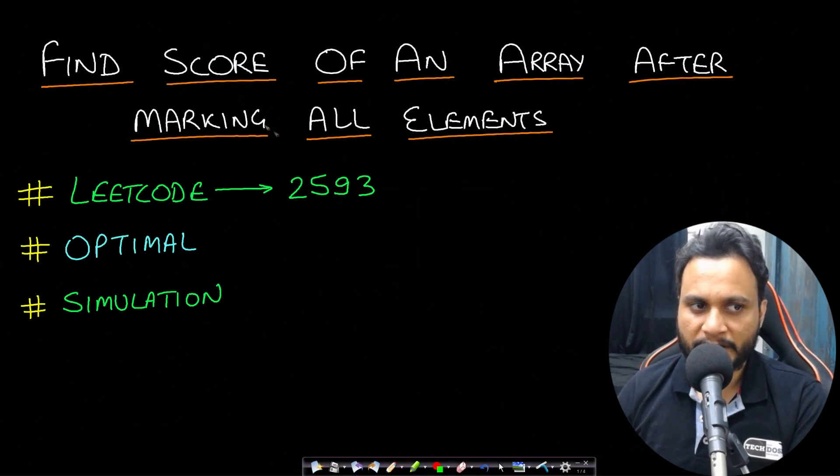Hello guys, welcome back to TakeDose. In this video we will look at find score of an array after making all elements problem which is from LeetCode number 2593.